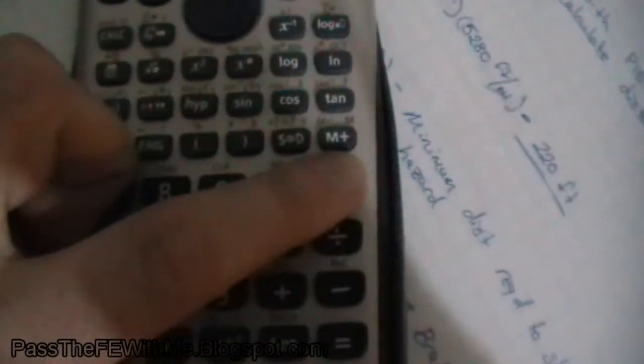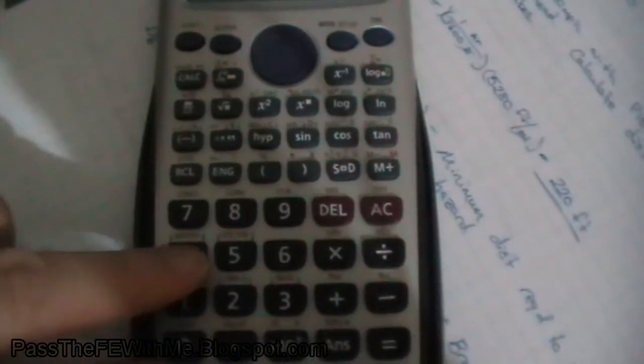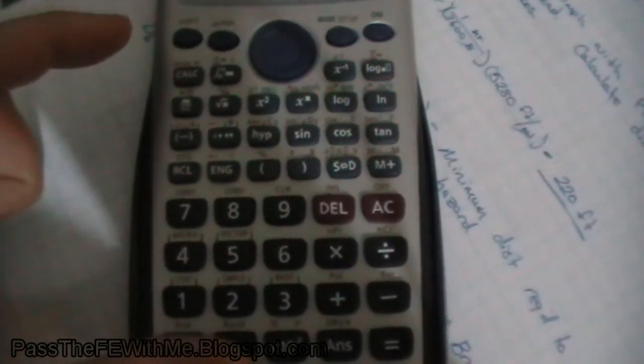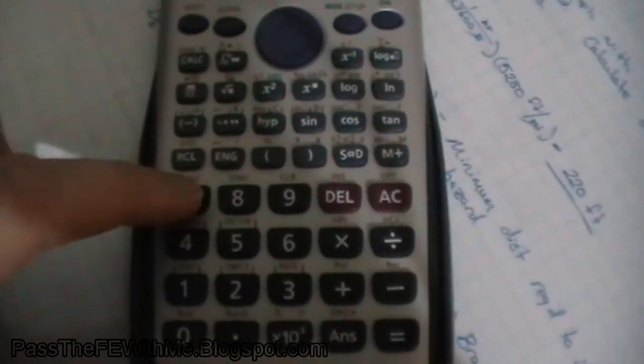We'll press AC to get out of the editor. Now, once again, shift 4 to get into matrix mode. We're taking the determinant, so press 7.